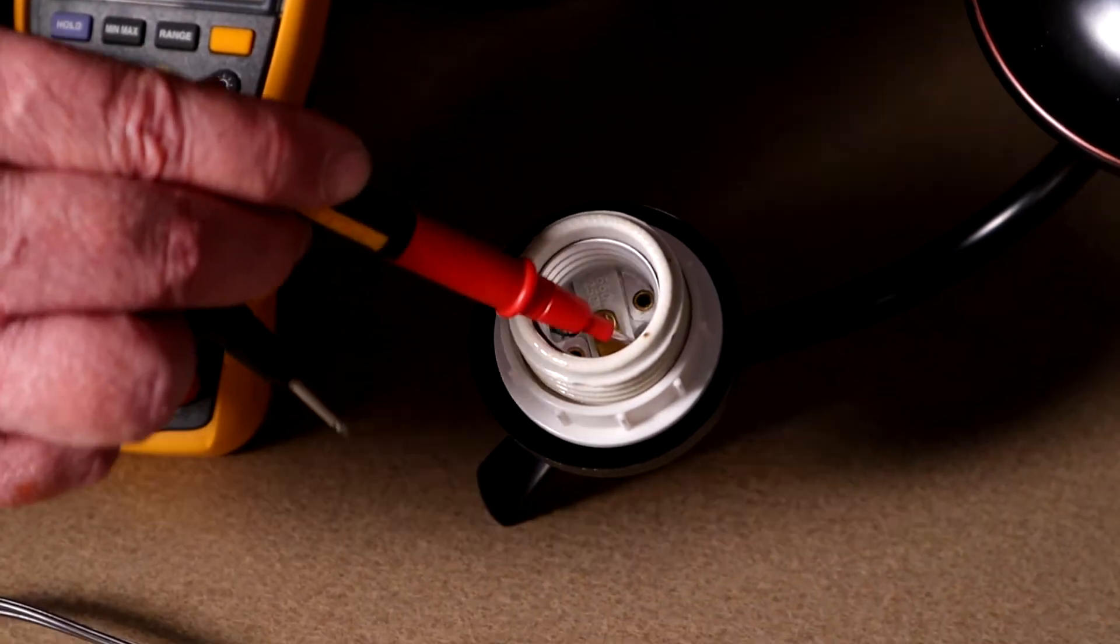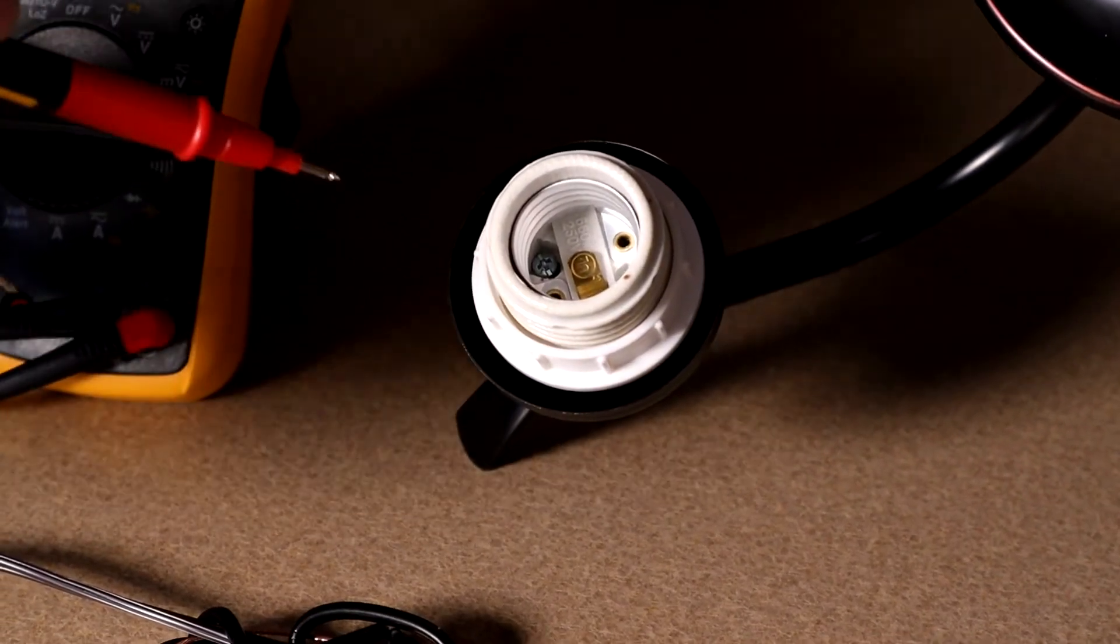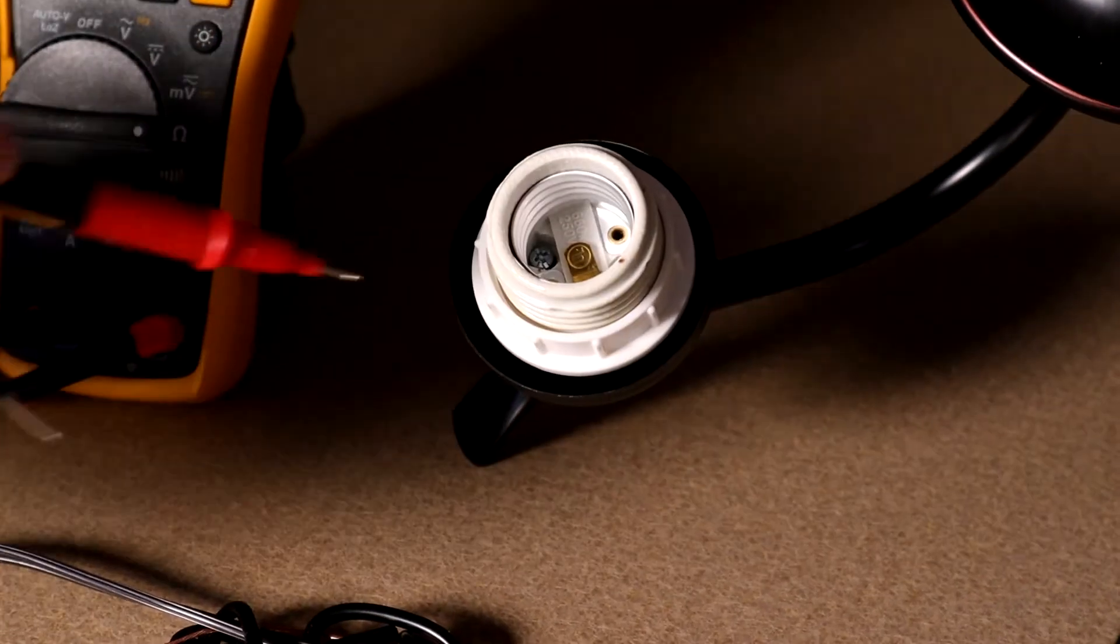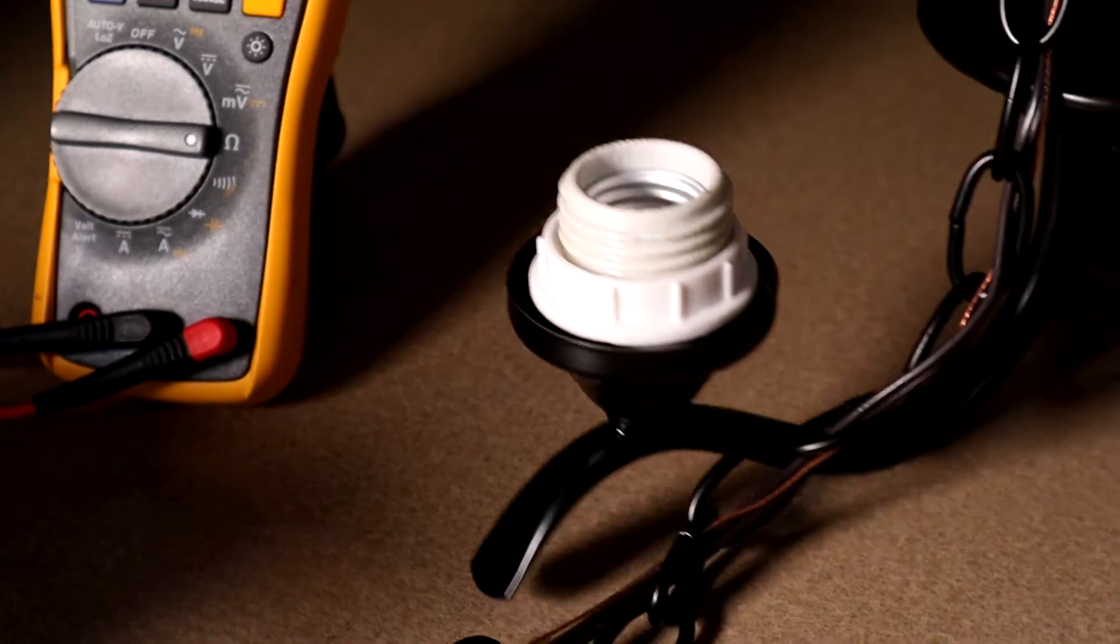This outer ring where the threads are is the other conductor and that's going to contact the threads on the light bulb. So that center conductor is what we're going to read to with our meter.